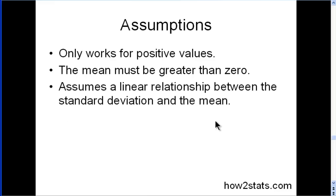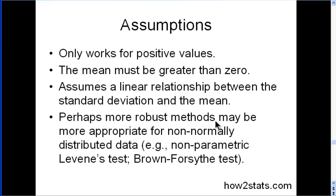Another assumption is that it assumes a linear relationship between the standard deviation and the mean, though that's fairly technical and probably always the case in practice. Regarding Levene's test, there are more robust approaches than simply using the mean — you could use the median, as the Brown-Forsythe test does, or a non-parametric Levene's test based on ranks. There are clear similarities between homogeneity of variance and homogeneity of coefficient of variation.